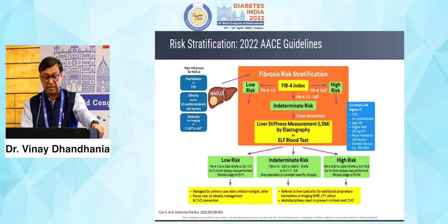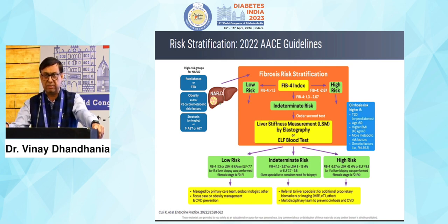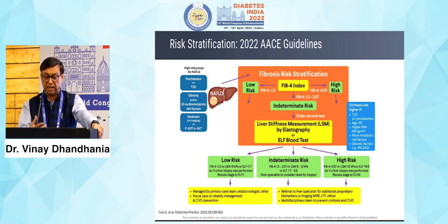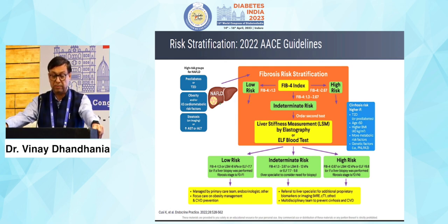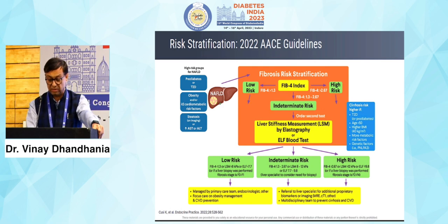Steatosis or increase in liver enzymes are important factors, and you need to stratify risk according to fibrosis using the FIB-4 score. You need AST, ALT levels, patient age, and platelet count — four important parameters. You can enter them into an app to calculate the score: less than 1.3 is low risk, more than 2.67 is high risk, and between 1.3 and 2.67 is indeterminate risk. This is how you stratify patients according to FIB-4 score.